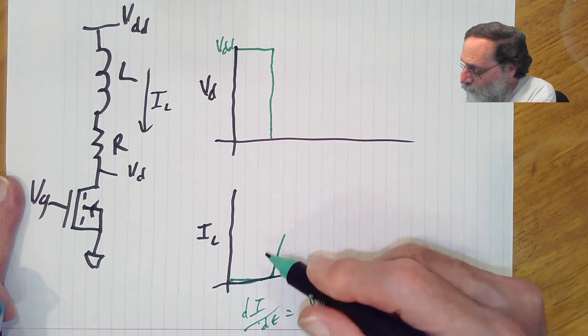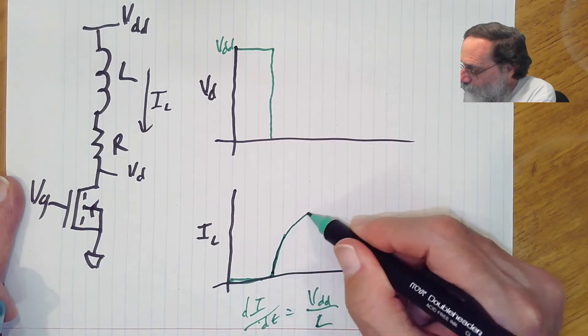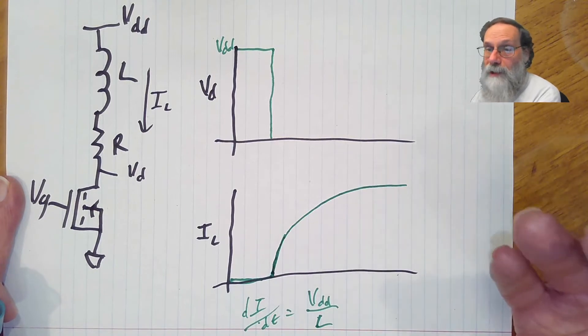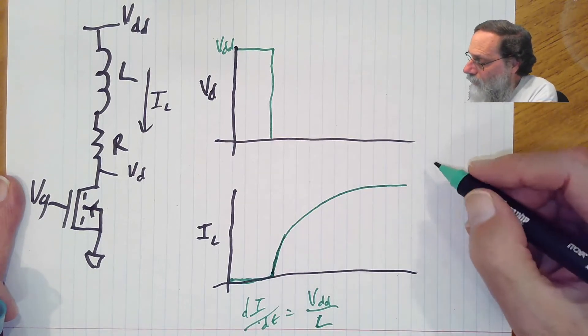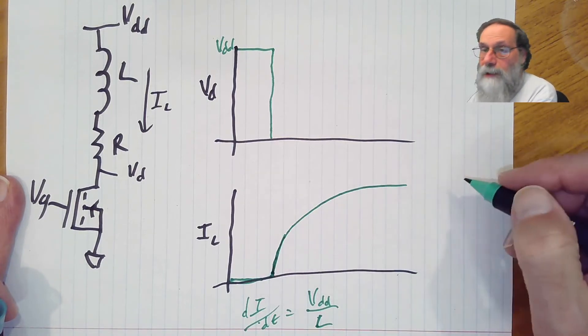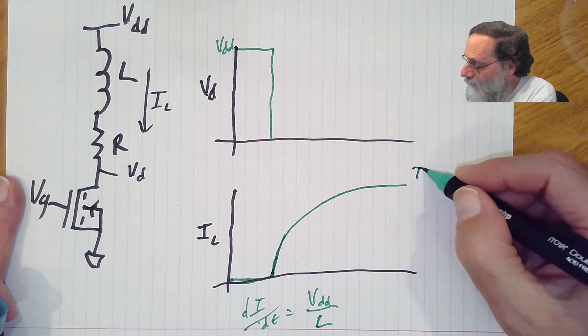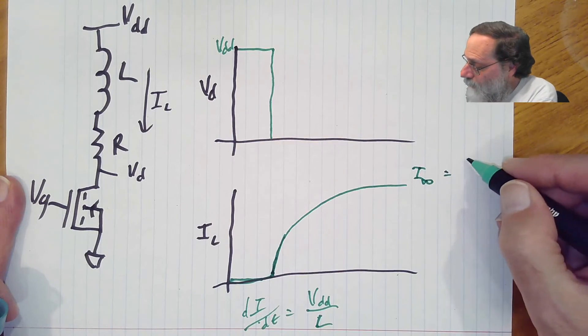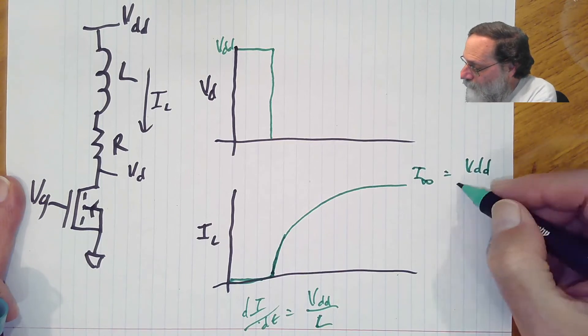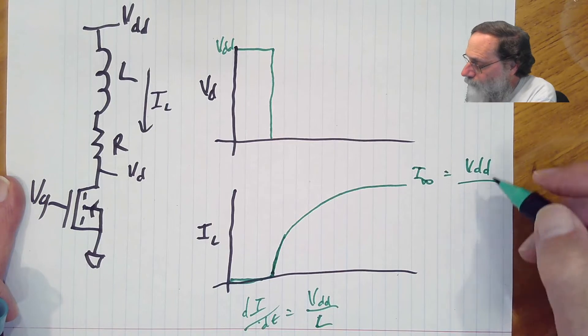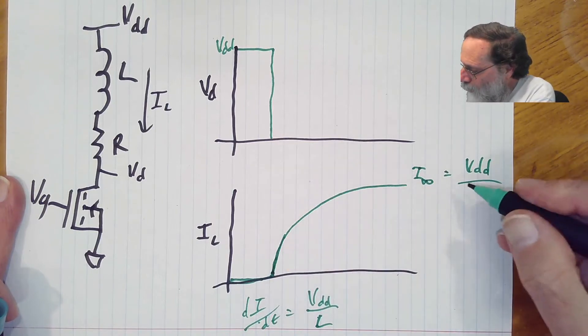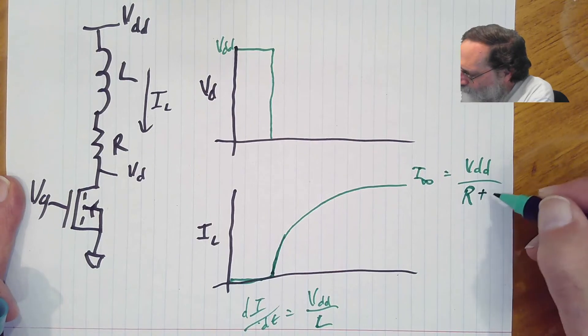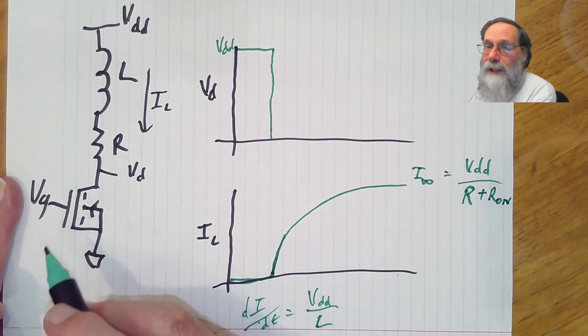When we've got this sort of differential equation, just like we had for charging a capacitor through a resistor, except we've swapped the roles of current and voltage, we're going to get an exponential charging curve. And so this curve is going to go up, reach an asymptote. The asymptotic value here that it's aiming towards is going to be VDD over R, or more correctly, R plus Ron, the on resistance of the gate.